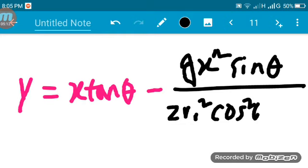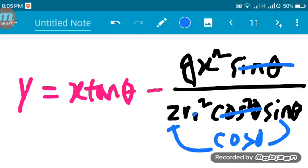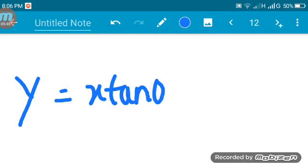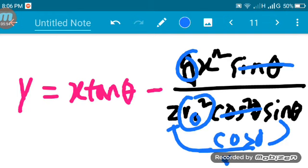We can simplify this equation using trigonometric identities. Sin theta divided by cos squared theta can be written as tan theta divided by cos theta. This gives us: Y = X tan theta - (X² tan theta)/(V² sin 2theta / g). The term V² sin 2theta / g is the total range R.